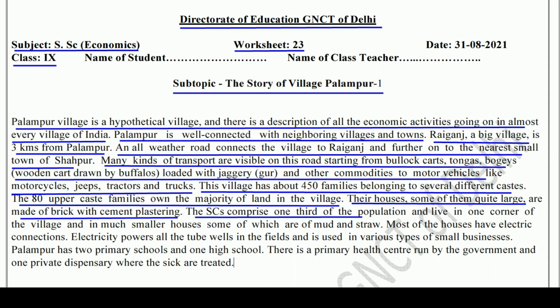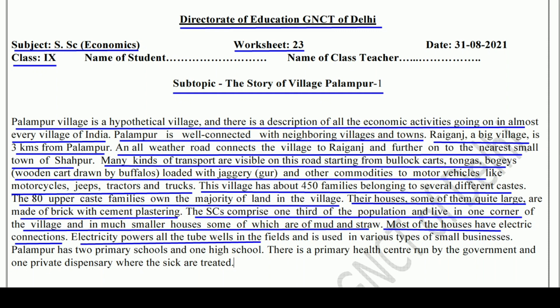The SCs comprise one third of the population and live in one corner of the village, and in much smaller houses, some of which are of mud and straw. Dekhiye, jo SCs hain — yaani jo anusuchit jati ke log hain — woh gaon ki janata ke population ke one third hain, aur gaon ke kone mein rahte hain. Unke ghar bhi kaafi chhote hain aur woh ghaas-phoos se bane hain — that means kacha house hain. Most of the houses have electric connections. Electricity powers all the tube wells in the fields and is used in various types of small businesses — yaani chhote chhote karyo mein bhi use hota hai.